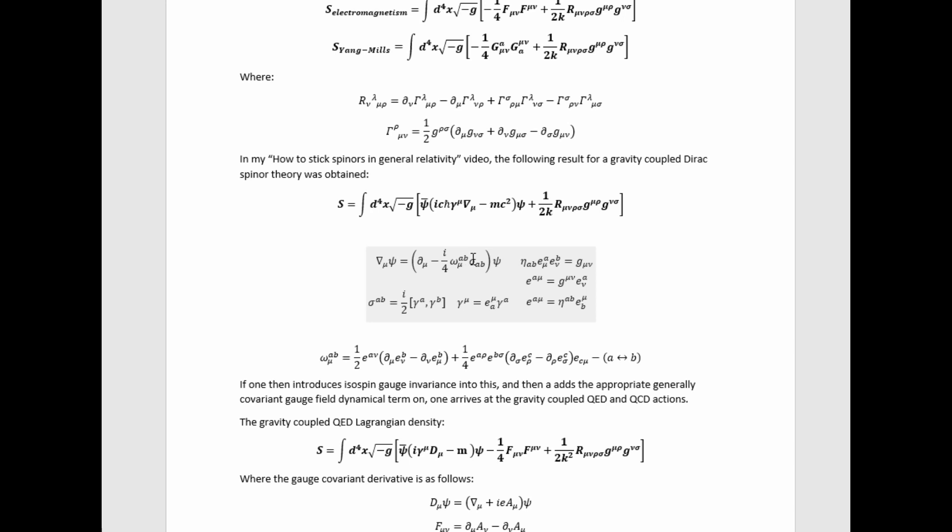where this is a spin connection and half of the sigma matrices are the generators of the Lorentz group. They are given by this commutator, and the curved gamma matrices are given in terms of the flat ones and the tetrad by this formula.